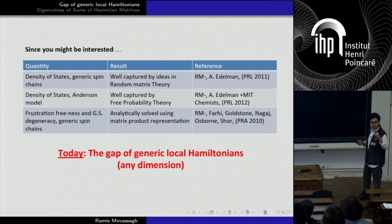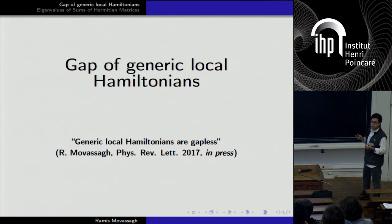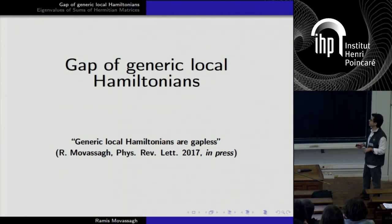The gap — that positive distance between the first two eigenvalues of generic local Hamiltonians. Generically — and in mathematics, generically means with probability one — we'll prove that these systems are gapless. Actually, a stronger notion: we'll prove that there is a continuous density of states sitting on top of the ground state. It's a strong notion of gaplessness.